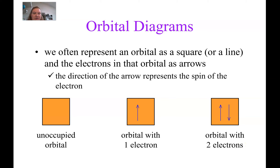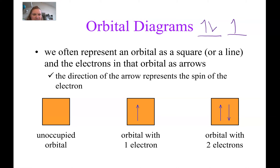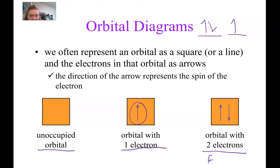These are called orbital diagrams. When we place electrons into their orbitals, we can represent an orbital as a square or just a line when drawing by hand. The arrows represent the electrons — it's common to use half arrows by hand. An empty box is an unoccupied orbital, a box with one arrow is a half-filled orbital, and a box with two arrows in opposite directions is a filled orbital.